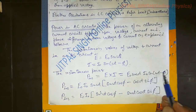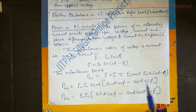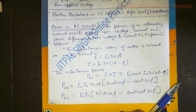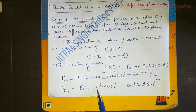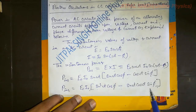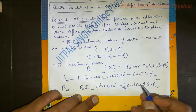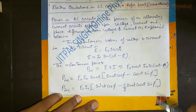Applying sin A cos B − cos A sin B, we get E₀I₀ · sin(ωt) · [sin(ωt)cos φ − cos(ωt)sin φ]. Taking sin(ωt) in, this becomes E₀I₀ [sin²(ωt)cos φ − sin(ωt)cos(ωt)sin φ]. In the second term, we multiply and divide by 2 to convert 2 sin(ωt)cos(ωt) into sin(2ωt).